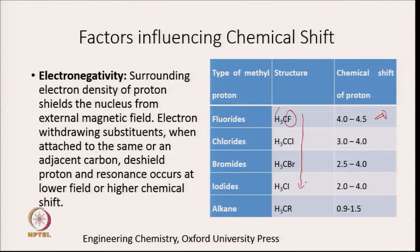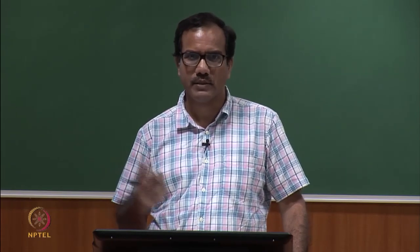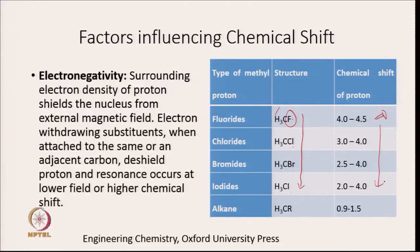As electronegativity decreases going down from fluorine to chlorine to bromine to iodine, fewer electrons are withdrawn from the proton, so deshielding is smaller and resonance occurs at higher field or lower chemical shift. The chemical shift value decreases going down the halogen group. In alkanes, the carbon is attached to an electron-donating R group, which is why you expect a small chemical shift.